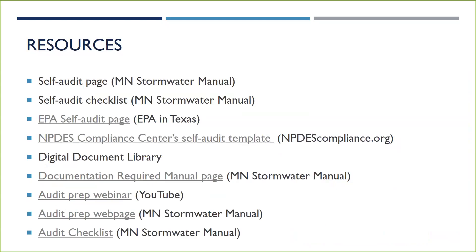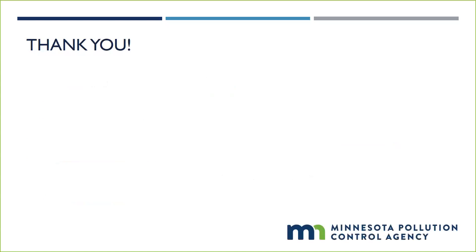There are many resources available to you as you go through the self-audit process and begin adapting your program. Visit the MPCA self-audit webpage, which includes the MPCA self-audit checklist. The EPA has a more comprehensive self-audit guide, and the NPDES compliance center has a free self-audit checklist you might find helpful. The MPCA also has guidance on documentation retention requirements and information on the state-led audit process. We hope this will encourage you to conduct a self-audit of your program. Thank you for your time.